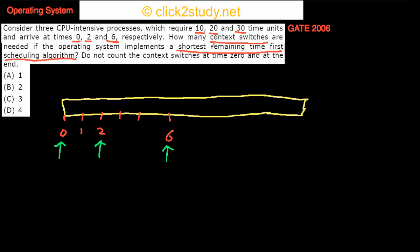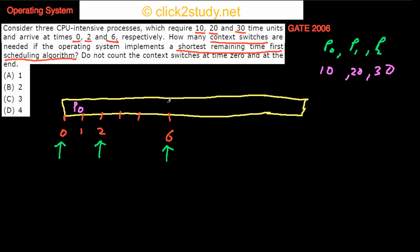I'll call these processes P0, P1, and P2 with burst times 10, 20, and 30 respectively. P0 runs first. At time 2, P1 arrives needing 20 units, but P0 still has 8 remaining — so P0 is shorter and keeps running. At time 6, P2 arrives needing 30 units, which is still greater, so P0 continues until it completes at time 10.